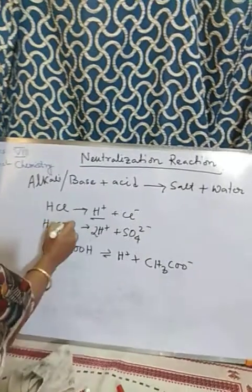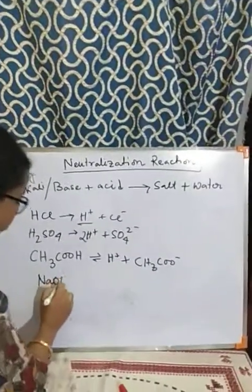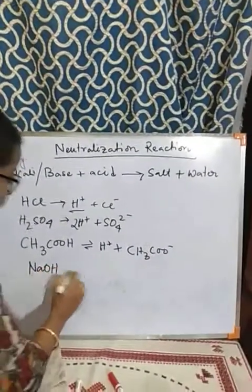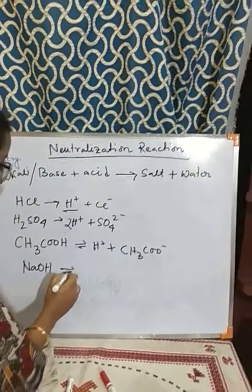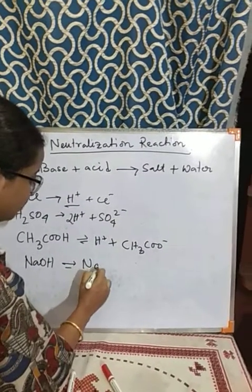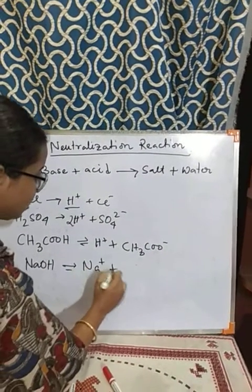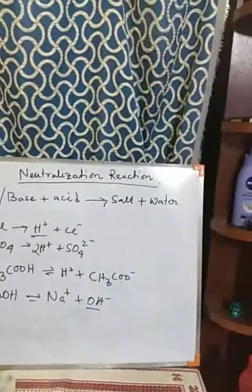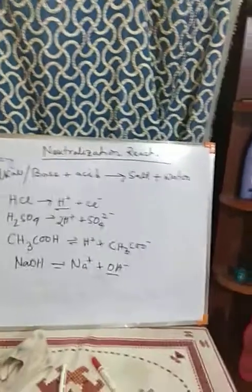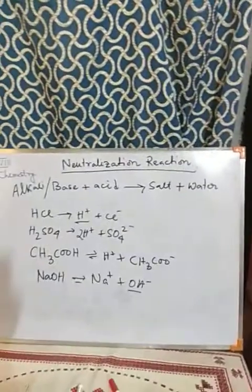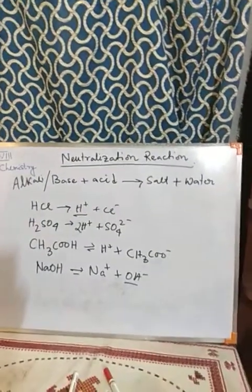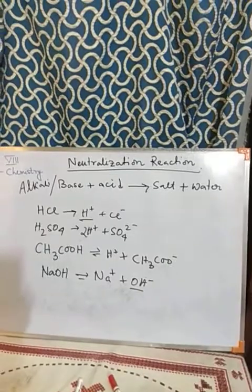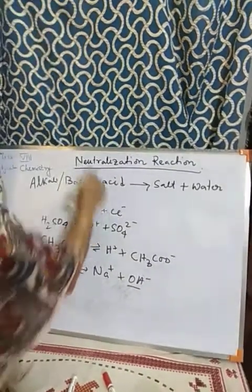For bases, from sodium hydroxide (NaOH) we get Na+ and OH−. From a base we get hydroxide ion (OH−). This is how acids and bases ionize, and this is the basis of how we understand neutralization reaction.